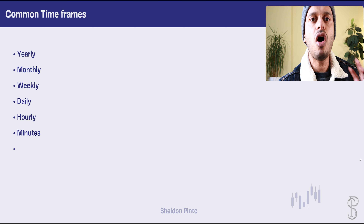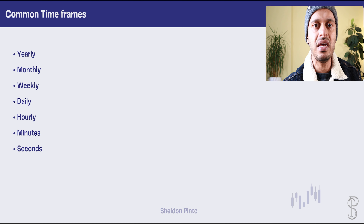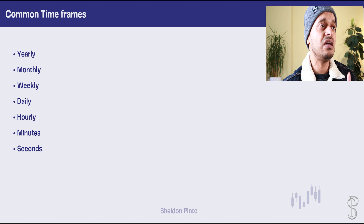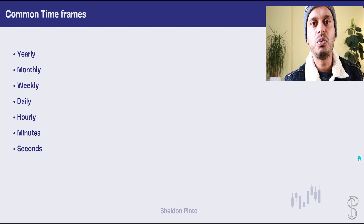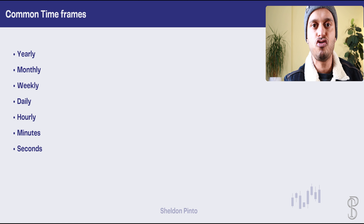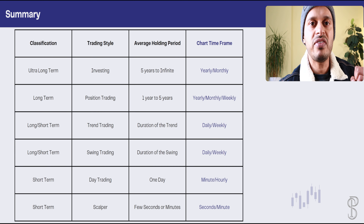We'll start by looking at what the common time frames available in trading are. We have the yearly, monthly, weekly, daily, hourly, minutes, and seconds. These are the common time frames that everyone is aware of and are available for everyone on your trading charts.